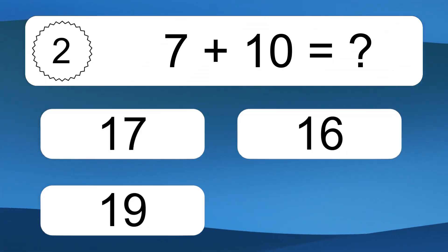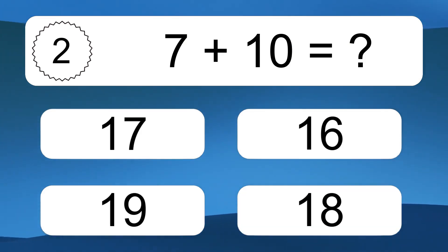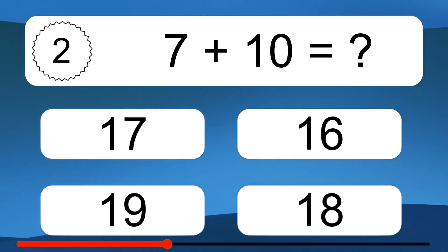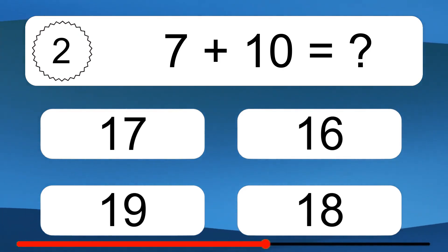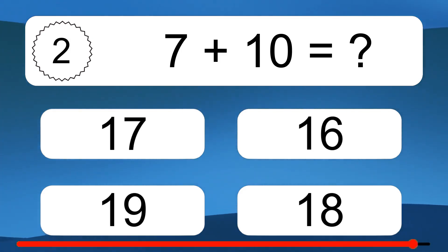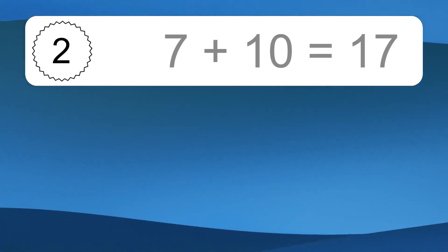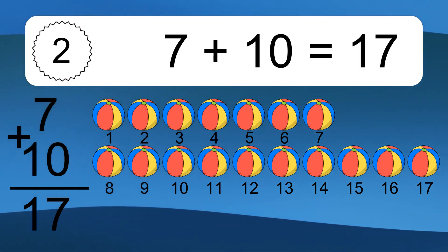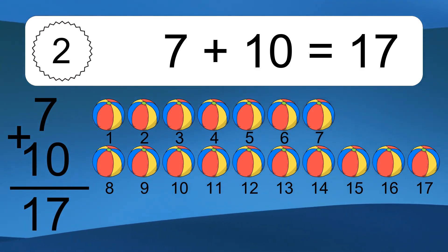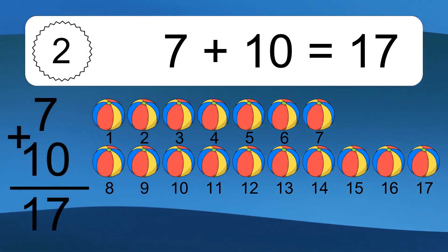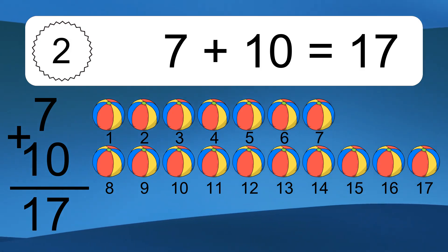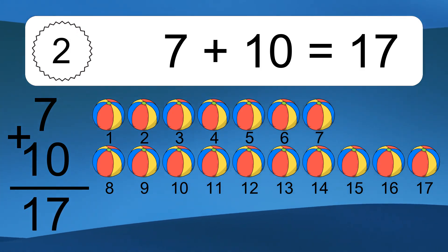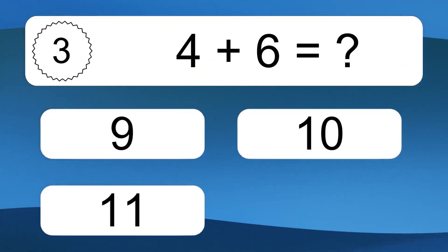7 plus 10 equals what? 7 plus 10 equals 17. Let's count it. 1, 2, 3, 4, 5, 6, 7, 8, 9, 10, 11, 12, 13, 14, 15, 16, 17. 4 plus 6 equals what?